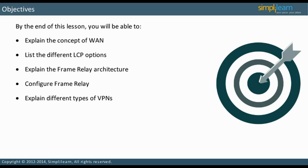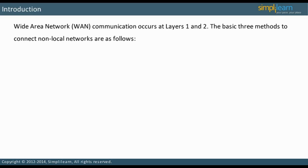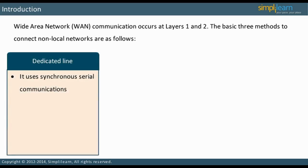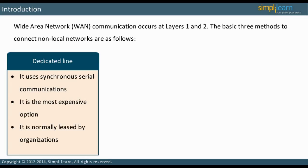Let us start our discussion of WANs. Wide Area Network communication occurs at Layers 1 and 2. There are three methods to connect non-local networks. The first is a dedicated line using synchronous serial communications. It is the most expensive option and is usually leased by organizations.